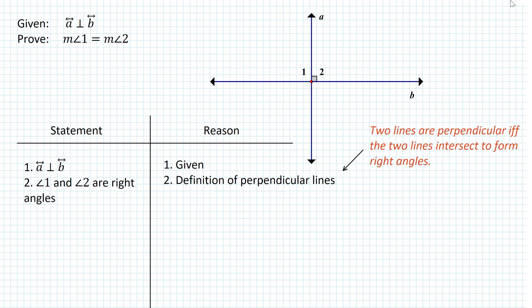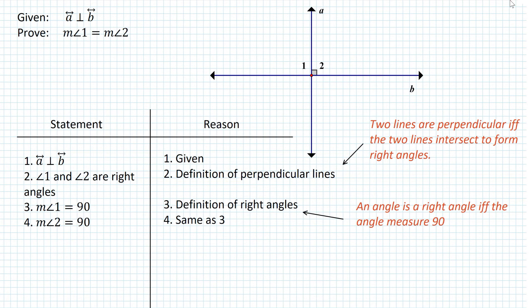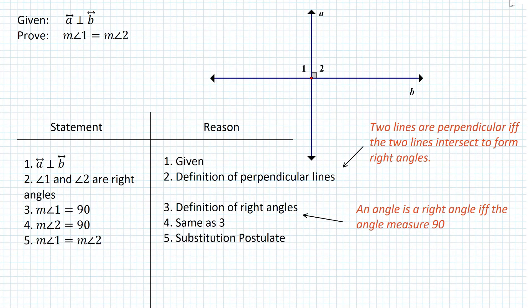We know that those two angles are right angles. That is the definition of perpendicular lines — the fact that angle 1 and angle 2 are right angles. The definition states: two lines are perpendicular if and only if the two lines intersect to form right angles. It's a biconditional because it goes both ways: if two lines are perpendicular and they intersect, they form right angles; or if two lines intersect to form right angles, then the lines are perpendicular. The conditional and its converse are both true, so the biconditional is true. Since angle 1 and angle 2 are both right angles, they both measure 90 degrees — by the definition of right angles. So measure of angle 1 equals measure of angle 2 by the substitution postulate.